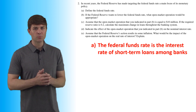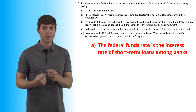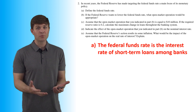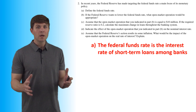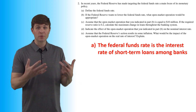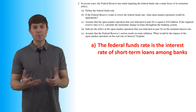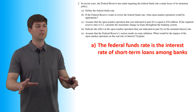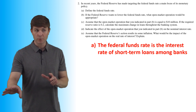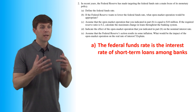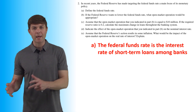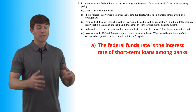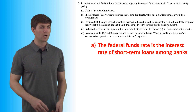So if a bank isn't quite making its reserve requirement, it can borrow money from another bank. Other banks are willing to do this because excess reserves that don't do anything have an opportunity cost — there's a loss of interest that could be made off those loans. So banks are really always willing to loan out every excess reserve, even if it means lending to another bank. That borrowing and lending from bank to bank is what determines the Federal Funds Rate.